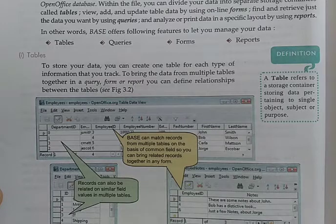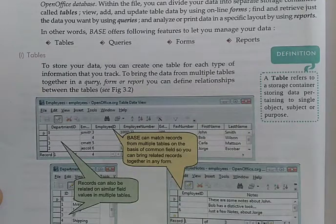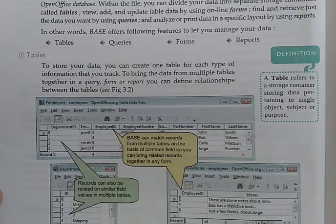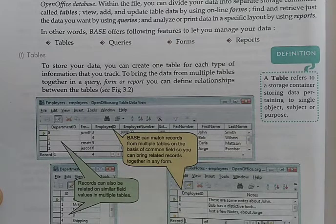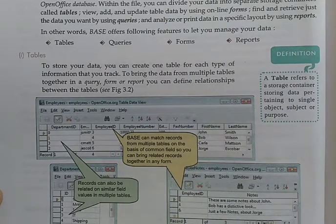For example, if you store the mobile numbers of all employees in one table and the addresses of all employees in another table, the first table contains only addresses and the second table contains only mobile numbers. This is the main difference between tables — each table stores one specific type of information.